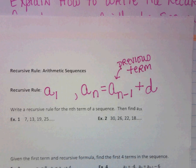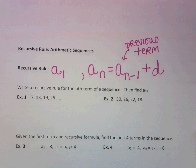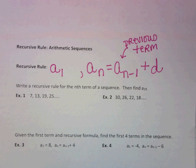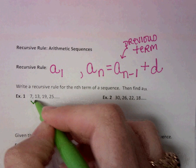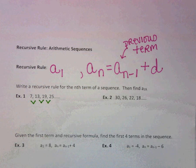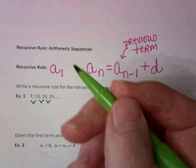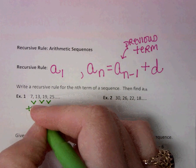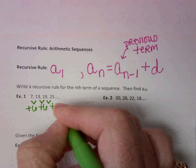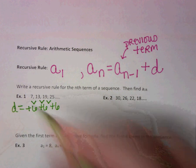Look at the first example. It says write a recursive rule for the nth term of a sequence, then find a sub 19. The first thing we're going to want to do is find our common difference. Every time here we are adding 6. So that is our common difference.